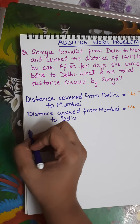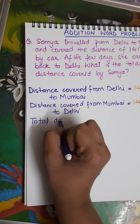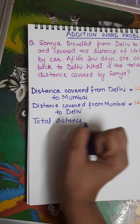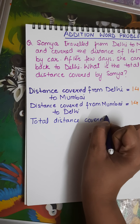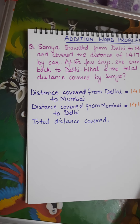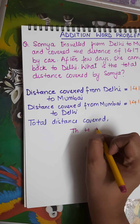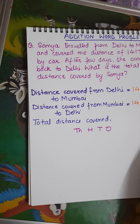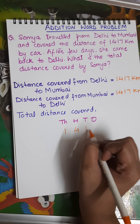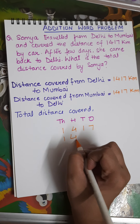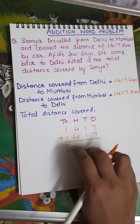Now, what the question is asking is the total distance. So my third statement will be: total distance covered. I am going to write down my places so that I can add — leave one row, write down your addends and add. I am leaving the addition up to you.